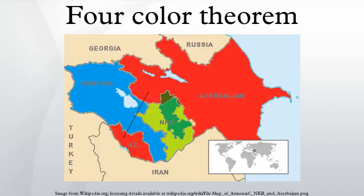There were several early failed attempts at proving the theorem. De Morgan believed it followed from a simple fact about four regions, though he didn't believe that fact could be derived from more elementary facts. He noted: 'We never need four colors in a neighborhood unless there be four counties, each of which has boundary lines in common with each of the other three. Such a thing cannot happen with four areas unless one or more of them be enclosed by the rest, and the color used for the enclosed county is thus set free to go on with.'